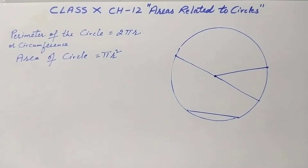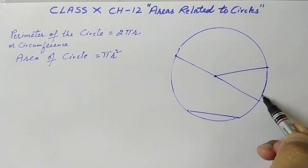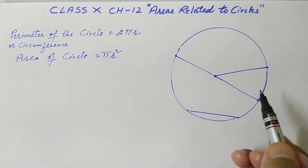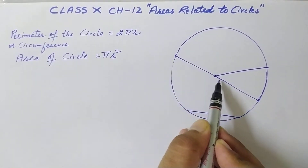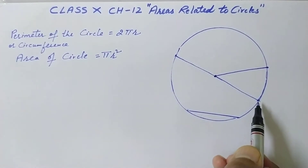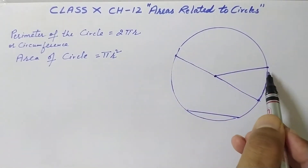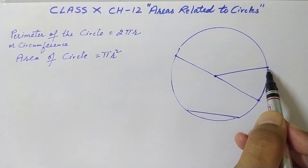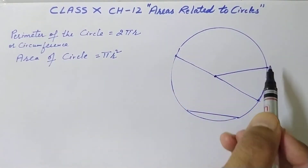Next, what is an arc? A part of the circle is called an arc. There can be many arcs on a circle. The diameter divides the circle into two parts; each part is called a semicircle. An arc smaller than a semicircle is called a minor arc, and an arc whose length is more than a semicircle is called a major arc.